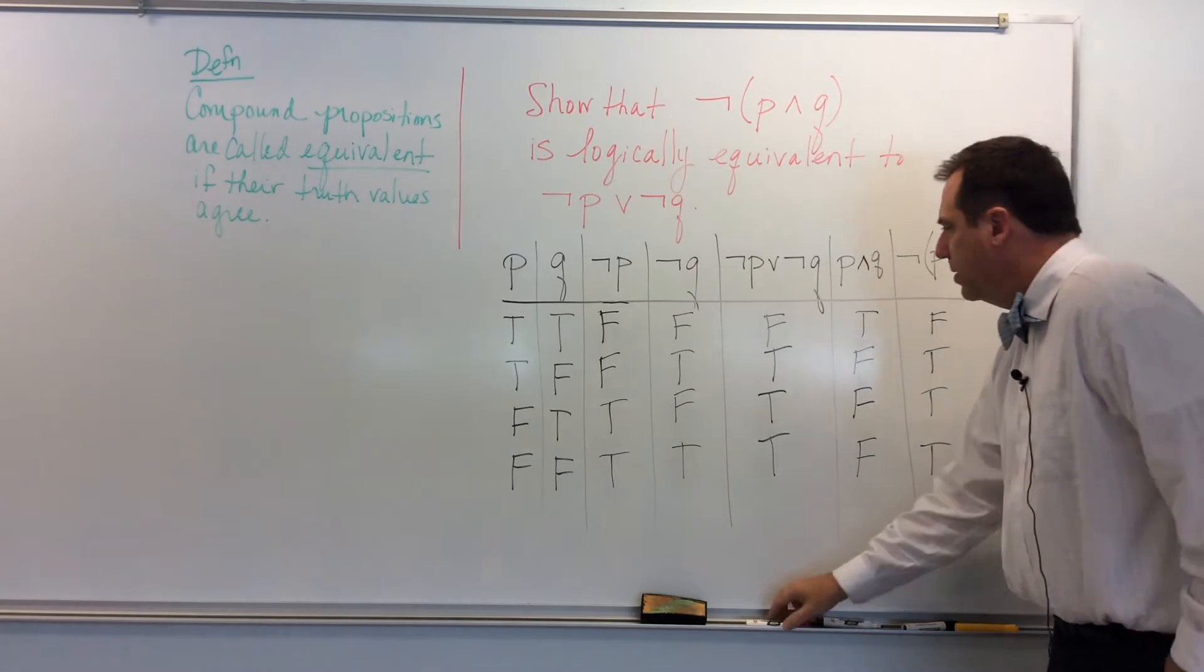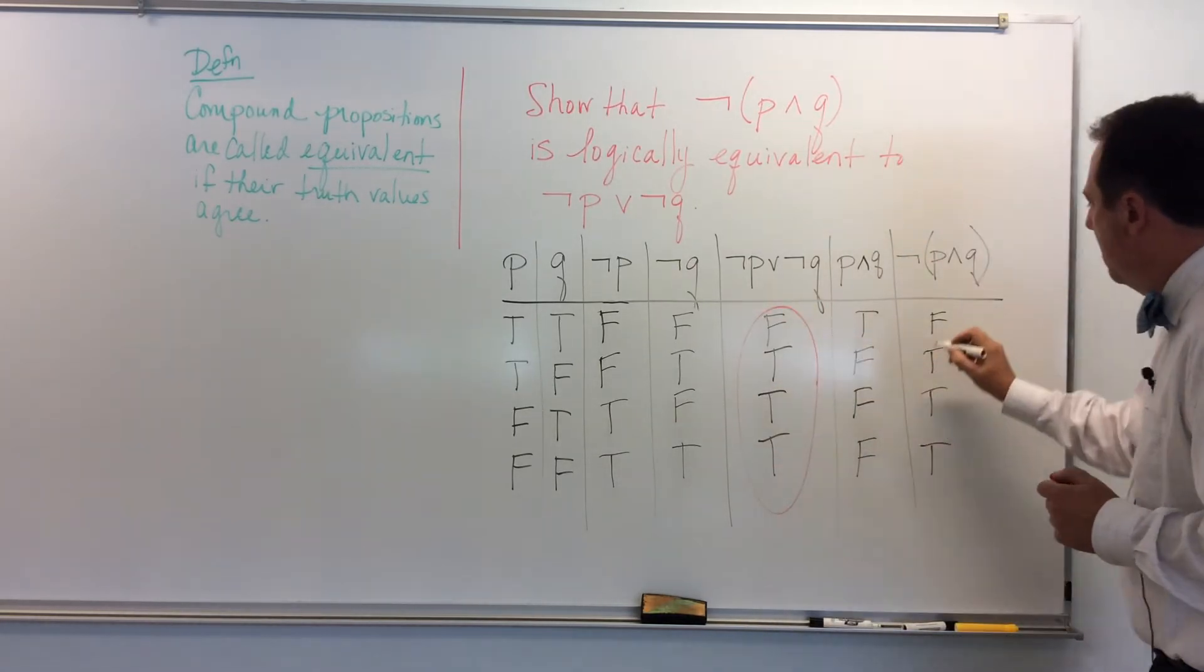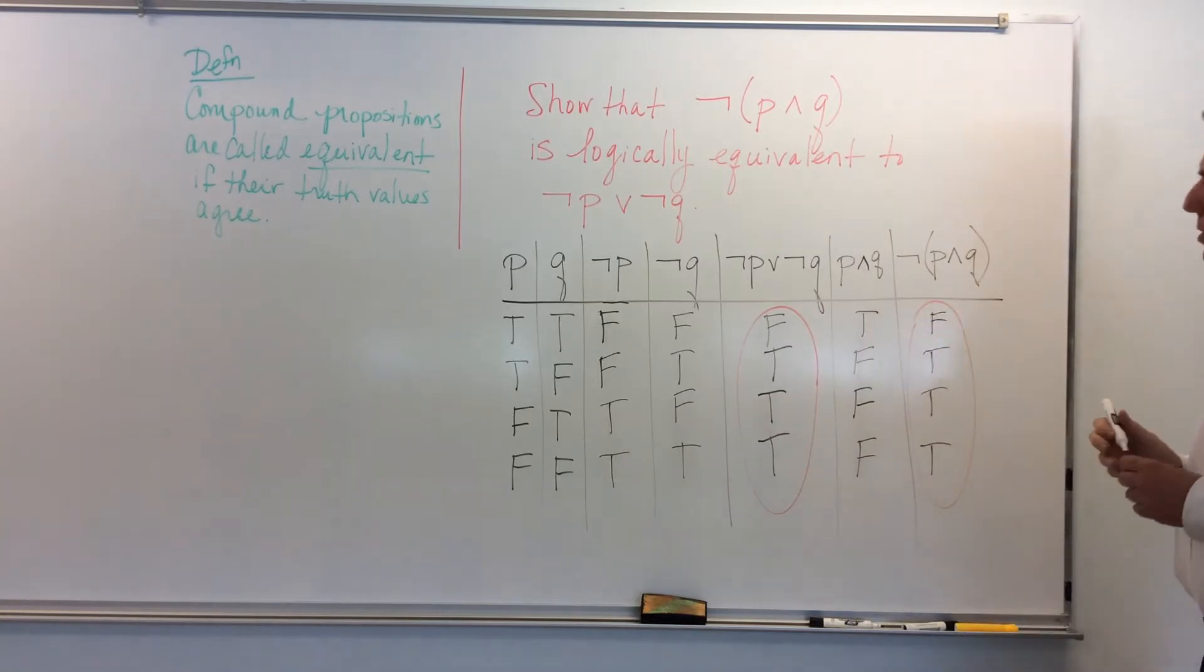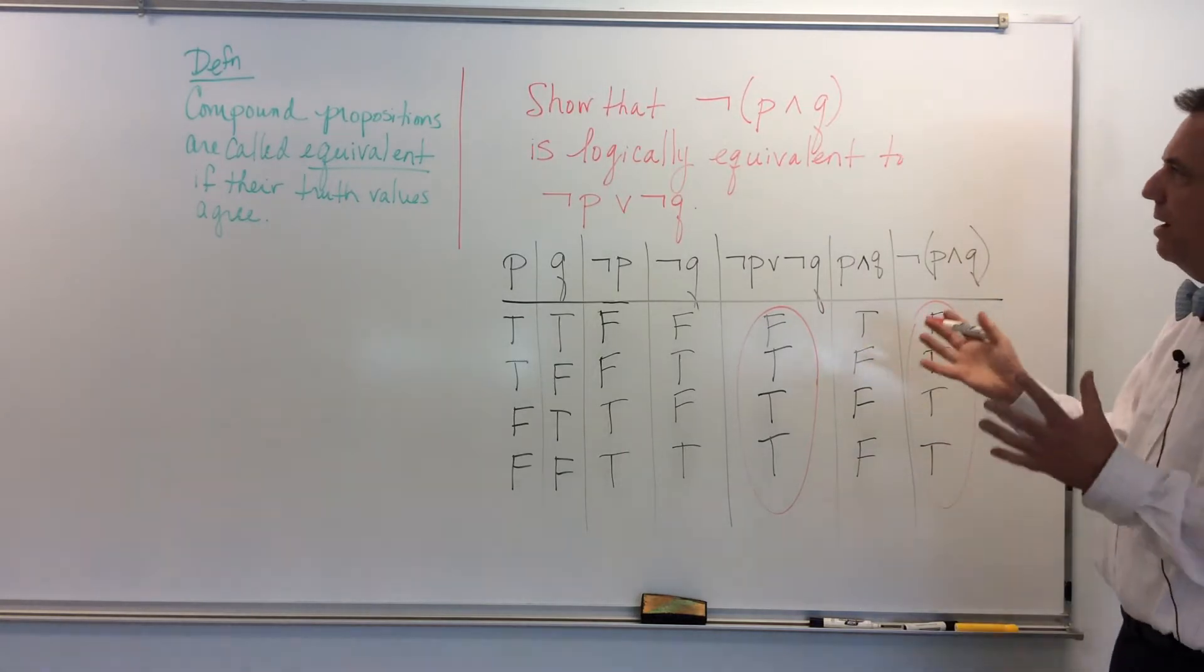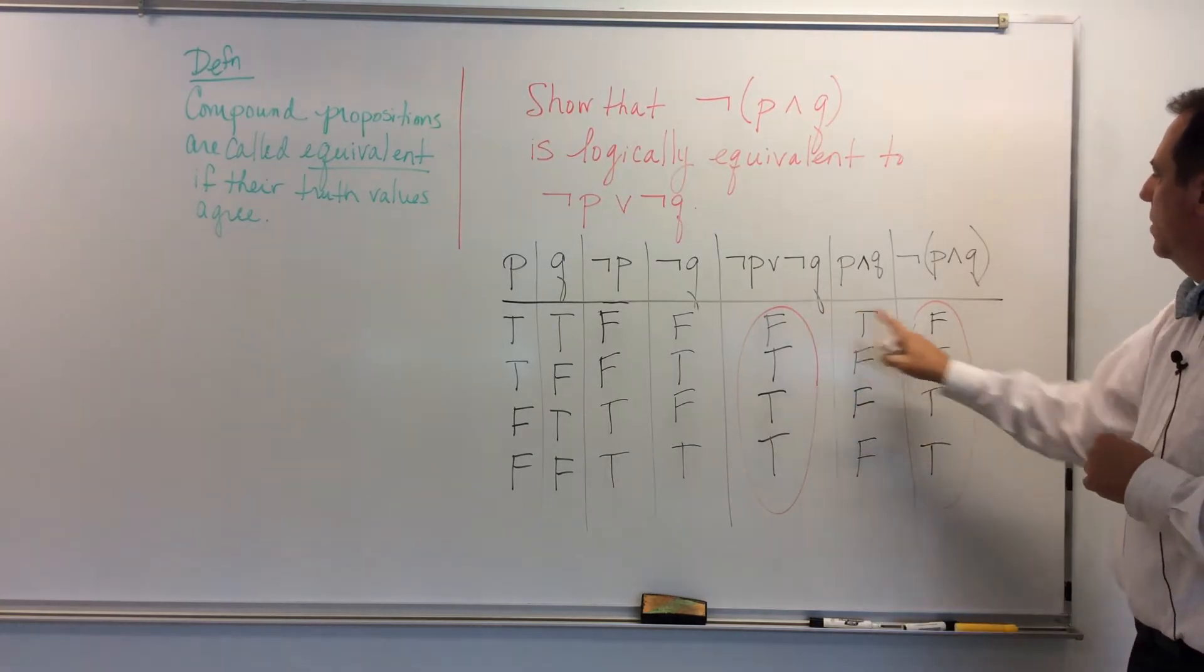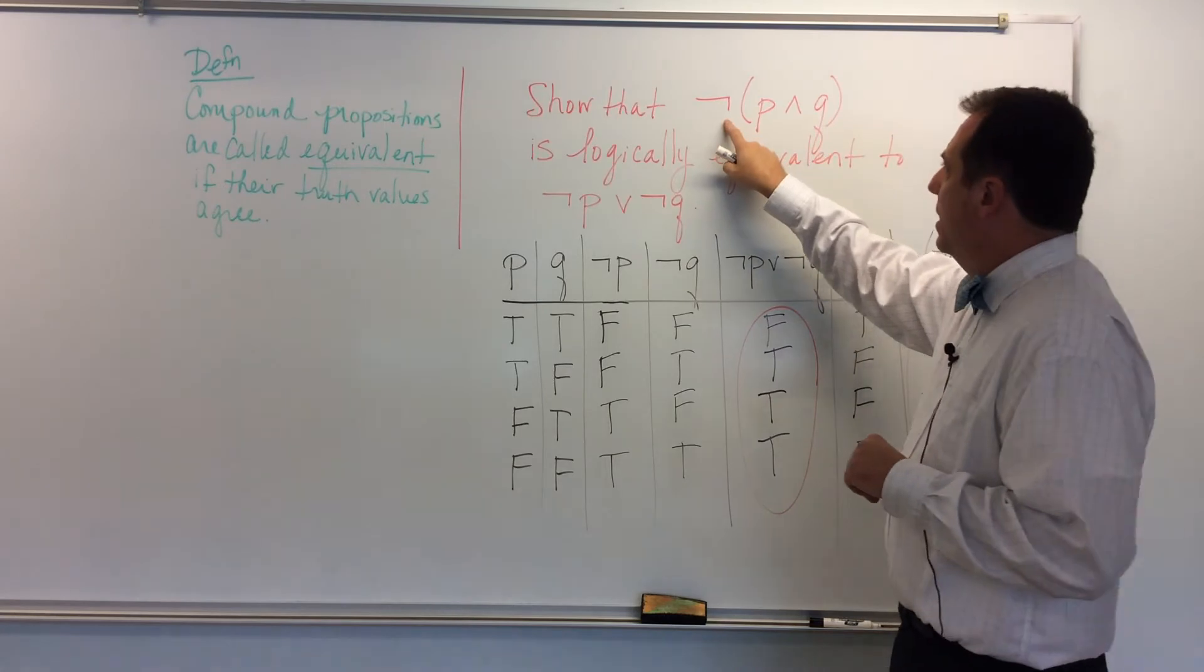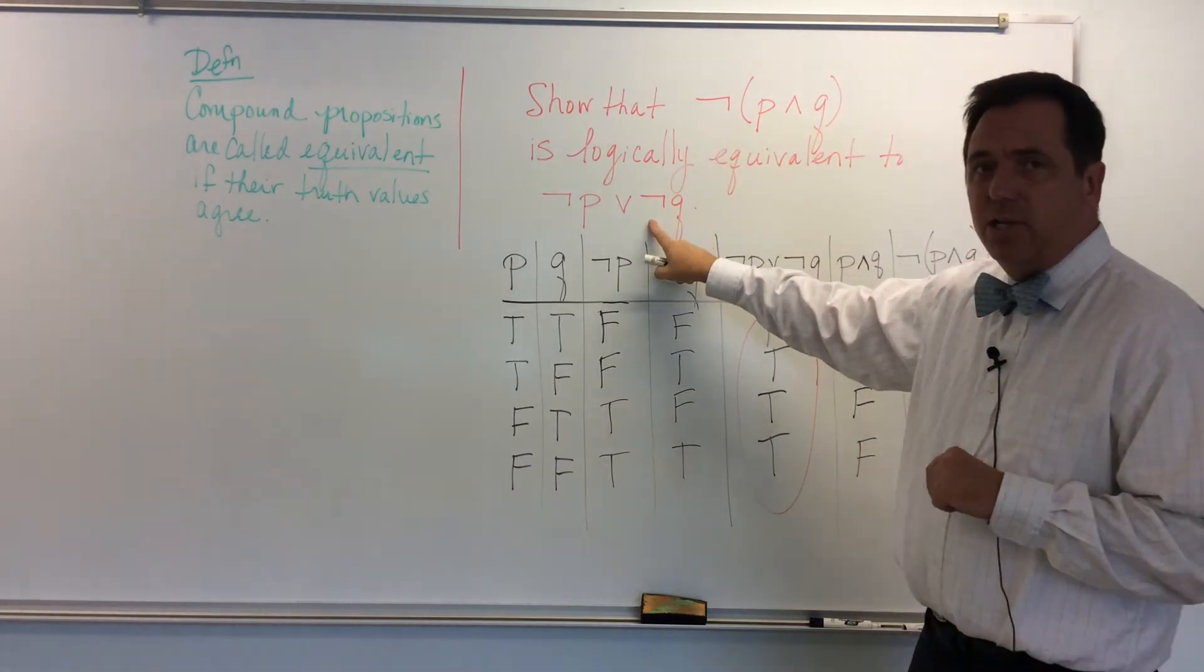So now what I do is I compare these two columns. And if they're the same in the truth table, then indeed I have two propositions that are equivalent. So sure enough, they agree. So we have shown that this guy is equivalent logically to this guy.